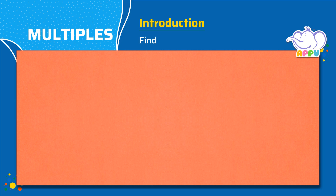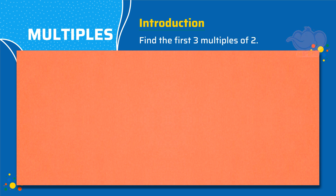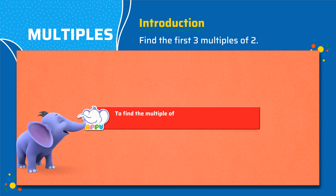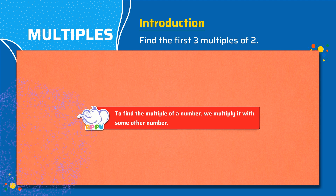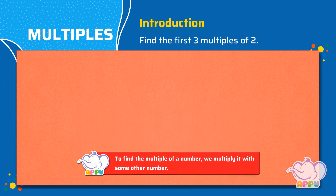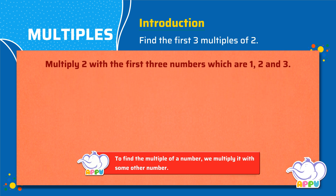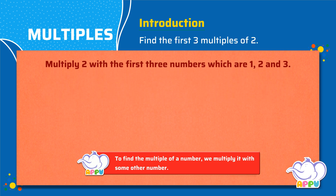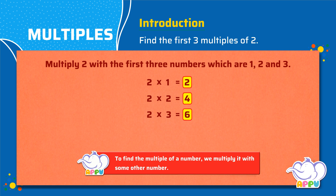For example, let's find the first 3 multiples of 2. To find the multiple of a number, we multiply it with some other number. To find the first multiple of 2, we multiply 2 and 1, that is 2. For the second multiple of 2, we multiply 2 and 2, that is 4. And for the third multiple of 2, we multiply 2 and 3, that is 6. So the first 3 multiples of 2 are 2, 4 and 6.